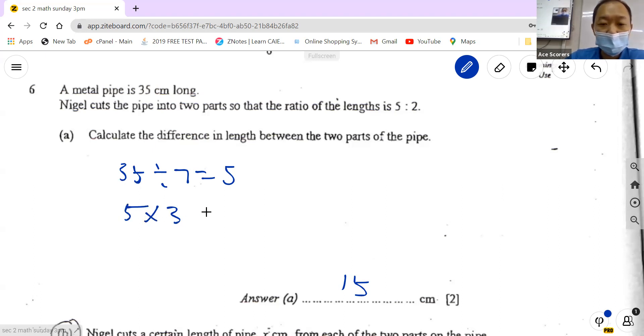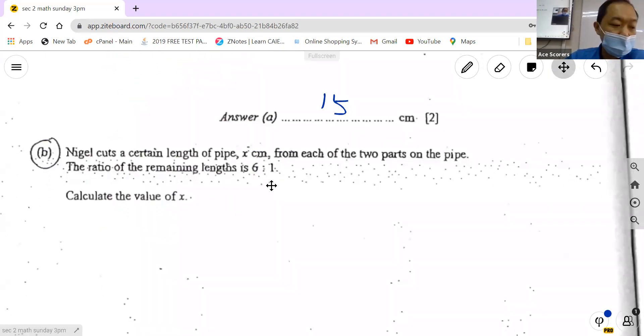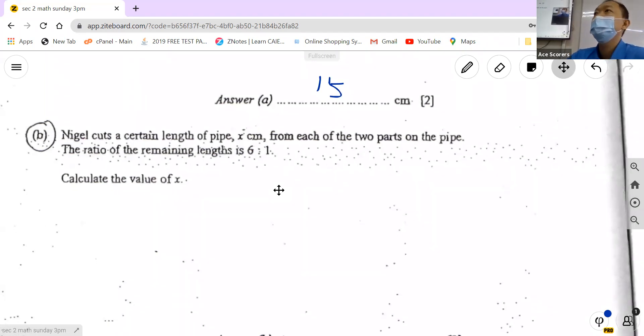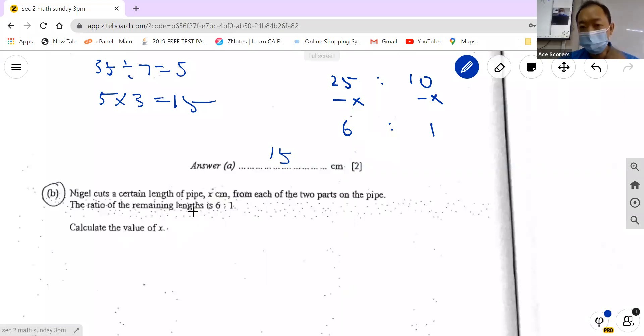Easy stuff. Next. Now Nigel cuts a certain length of pie x from each of the two parts. The ratio of the relay is 6 is to 1. Calculate the value of x. So this is a bit tougher. Please try and see. If you find x you need to come up with an equation. They say that the ratio is 6 is to 1, that means if I take the long one divided by the short one.